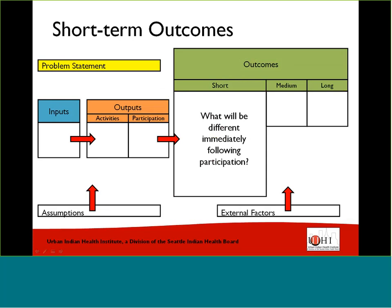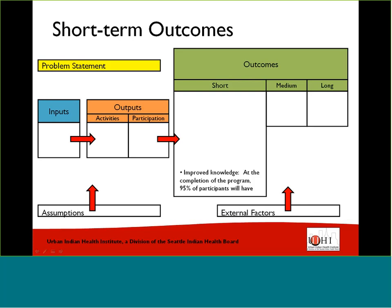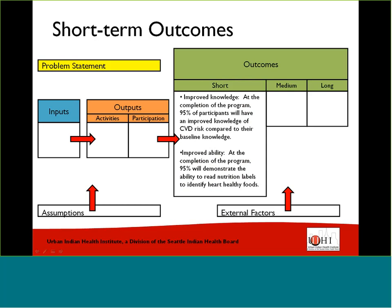Short-term outcomes can include changes in knowledge, awareness, attitudes, skills, opinions, motivation, or intention. For our program example, we may hope to see improved knowledge — at the completion of the program, 95% of participants will have improved knowledge of CVD risk factors compared to their baseline knowledge. Or improved ability — 95% will demonstrate the ability to read nutrition labels to identify heart-healthy foods. Or improved confidence — 95% of participants will feel more confident in their ability to achieve personalized health goals compared to their confidence levels measured at baseline.